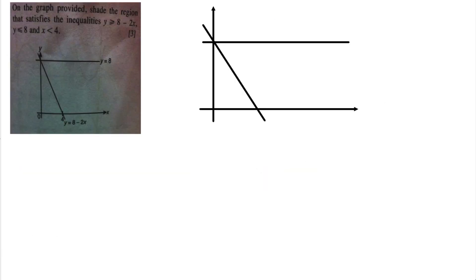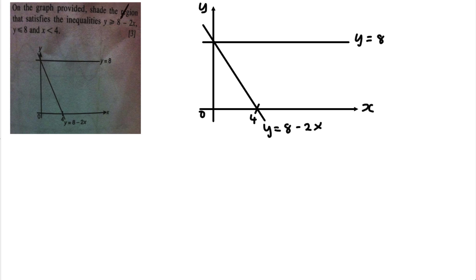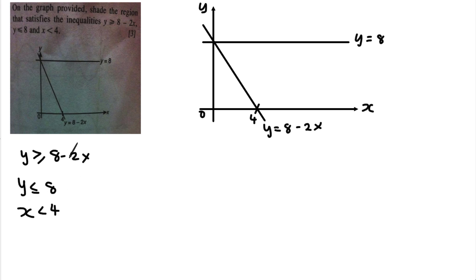For the third question, I've already roughly drafted the setup. I have y, and there's an equation y = 8, and another equation y = 8 − 2x. The graph gives an intersect at 4 on the x-axis and 0. The question asks to shade the region satisfying all three inequalities. I'll write them out: y is bigger than something, then y ≤ 8, and x < 4. In the graph, all bigger/less-than signs change to equals for drawing the lines.